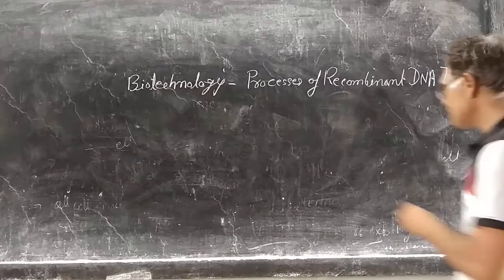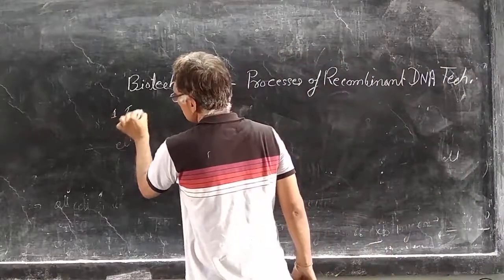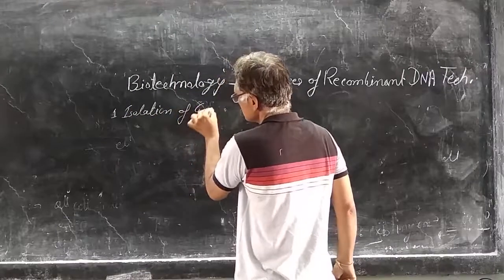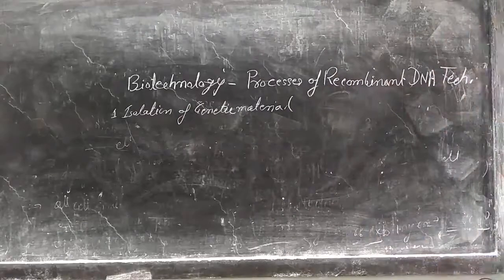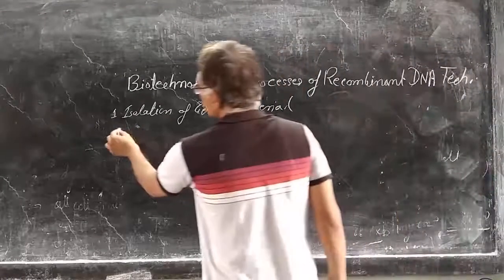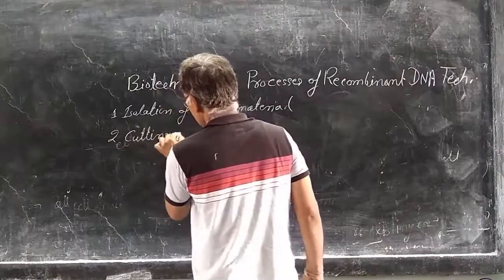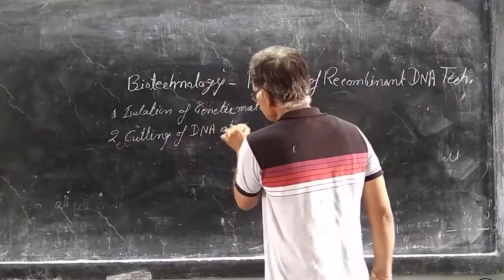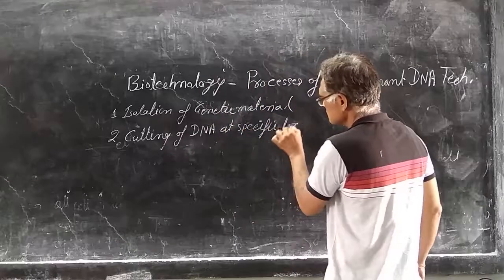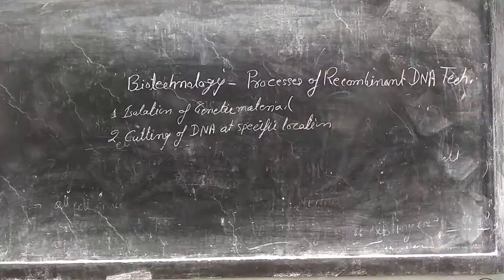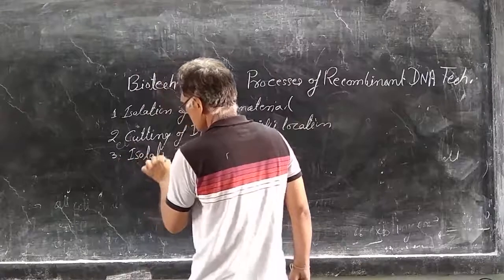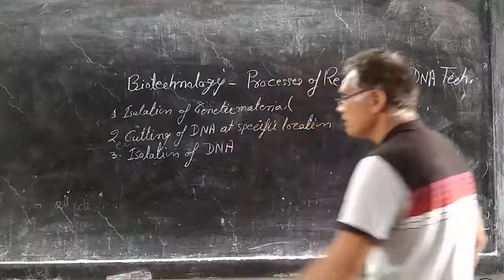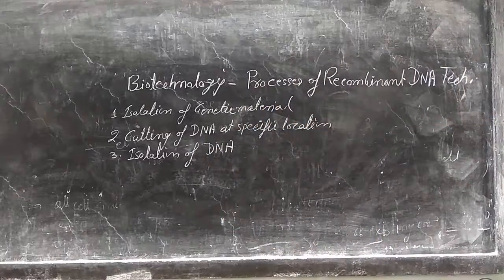The first stage is isolation of genetic material — separate out and isolate the genetic material. The second is cutting of DNA at a specific location — cutting DNA at a particular location. Then after isolation of DNA, we have isolation of the cut DNA, that is isolation or separation of DNA.